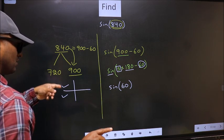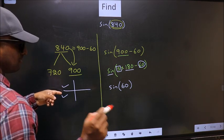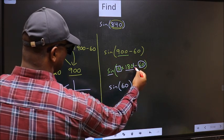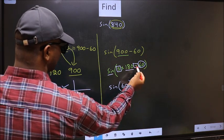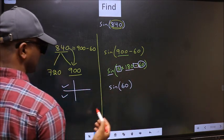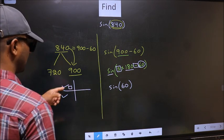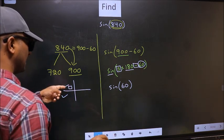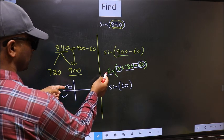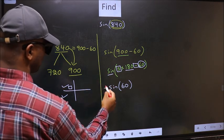So now to select the quadrant, we should look at this symbol. Here we have negative. That means the angle lies in the second quadrant. And in the second quadrant, sin is positive. So we should put plus.